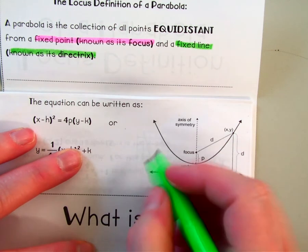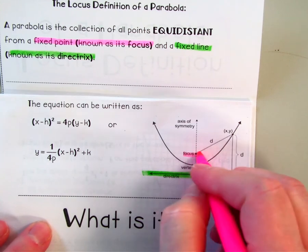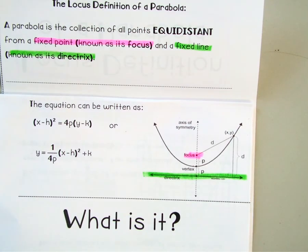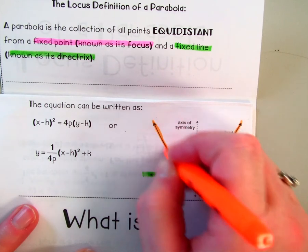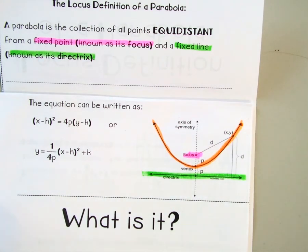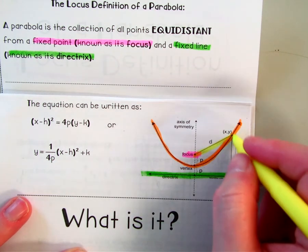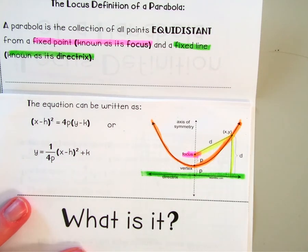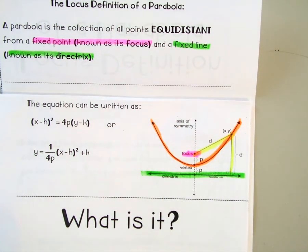Looking at the picture, this line here is our directrix — it happens to also be the x-axis in that picture. This point is our focus, and it creates this parabola. The parabola shows all of the points that are the same distance from the focus and the directrix. For example, this point here: the distance to the focus equals the distance to the directrix. That is true for all points on the parabola — the vertex, and any other point on that orange line.